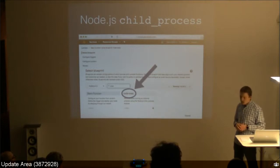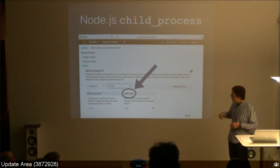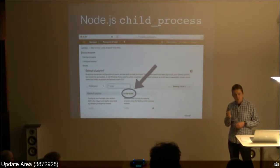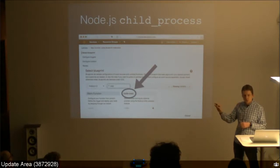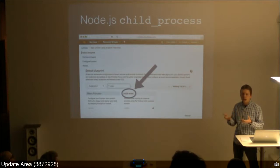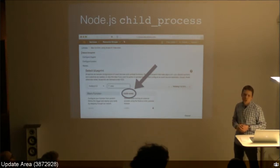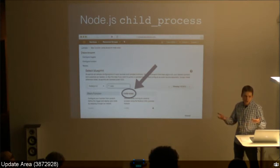Natively, Lambda supports Node.js, Python, Java, and recently C#. Swift is not natively supported. What you have to do is use a blueprint called Node.exec — you write a little JavaScript function that uses a library called child_process, execute an external process which is your Swift program, and then the Swift program does what it's supposed to do and returns the result back through JavaScript to Lambda. You have to build your Swift code into one executable, like a command line program. This is nothing unusual — there are projects that do this for Go or any other natively compiled programming languages.